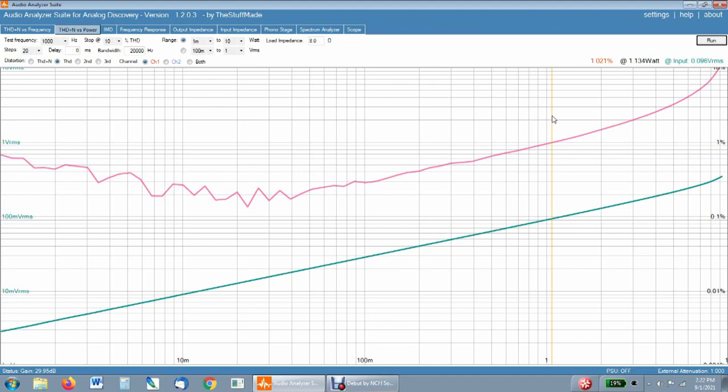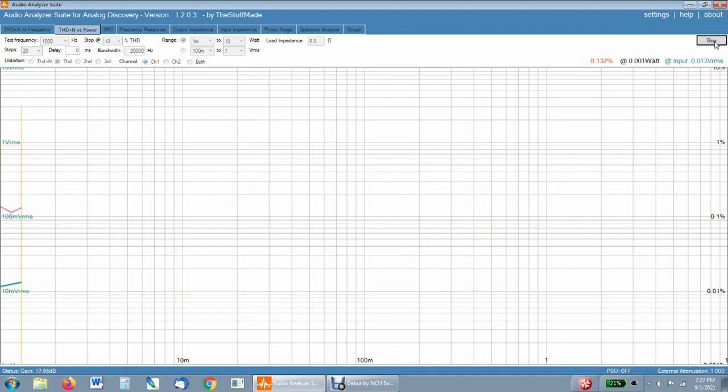Now we're going to switch to the cascode side and see what kind of readings we get. We're already looking way better. It's actually going underneath the signal, which is a really good sign.